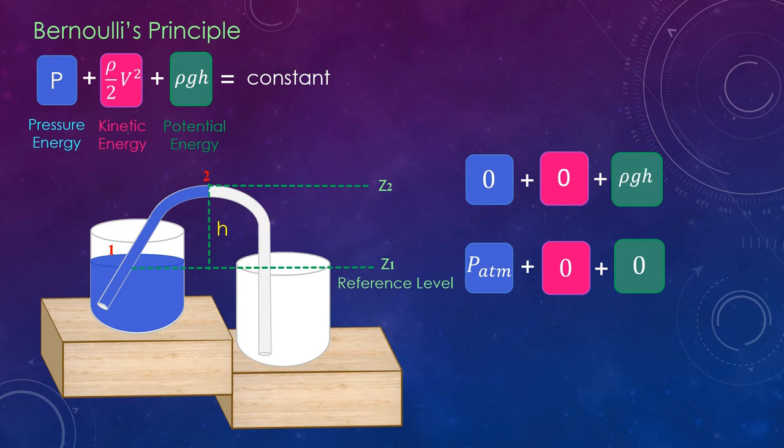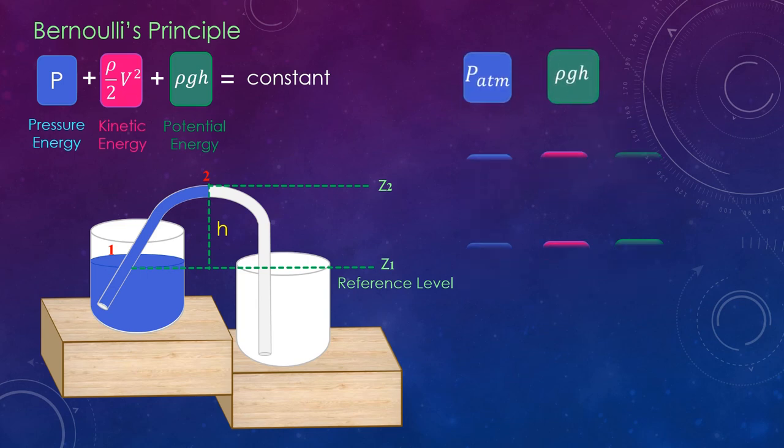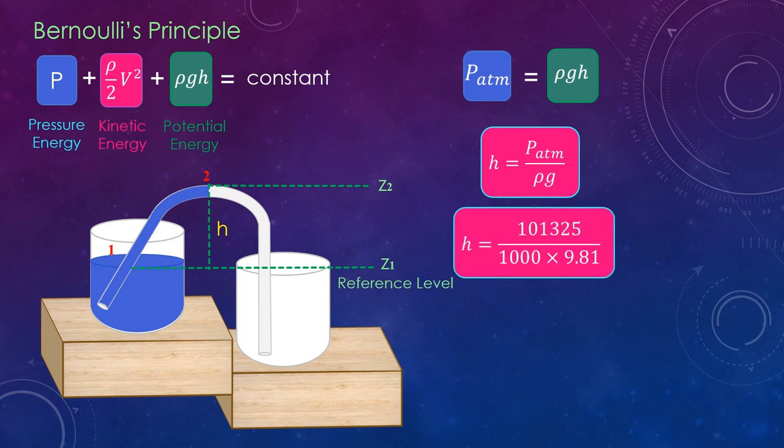On rearranging the terms we get this equation. Further, we can write h equals P_atm divided by rho g. On substituting the properties of water and atmospheric pressure, we get the maximum height for siphoning of water to be 10.32 meters. So beyond this height, siphoning will not work.